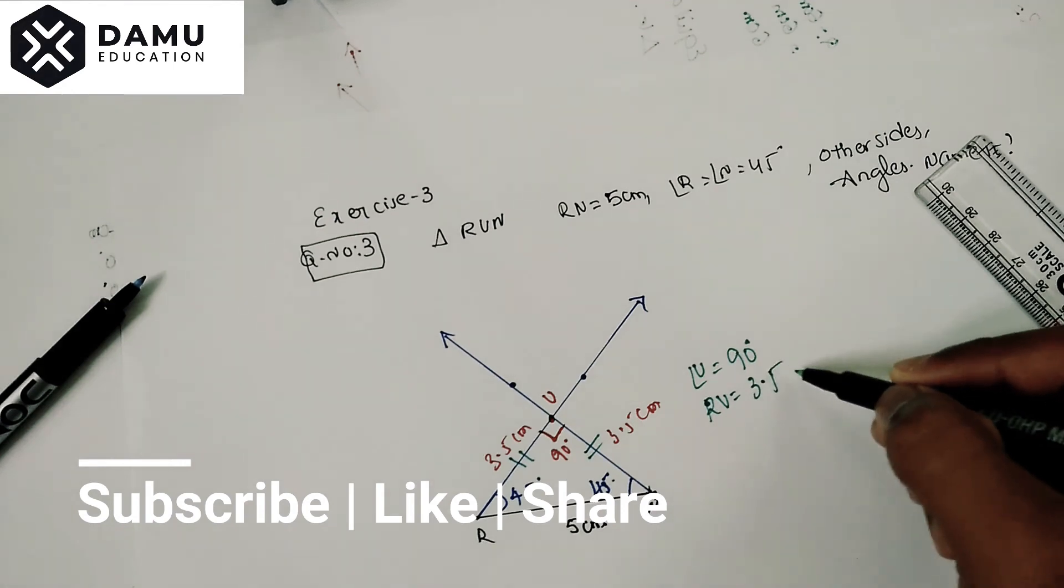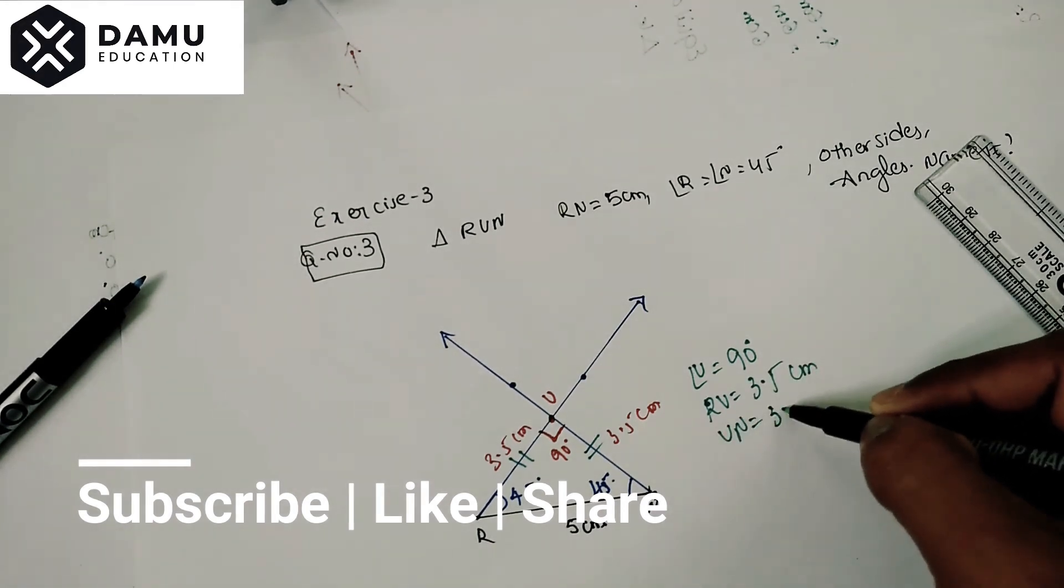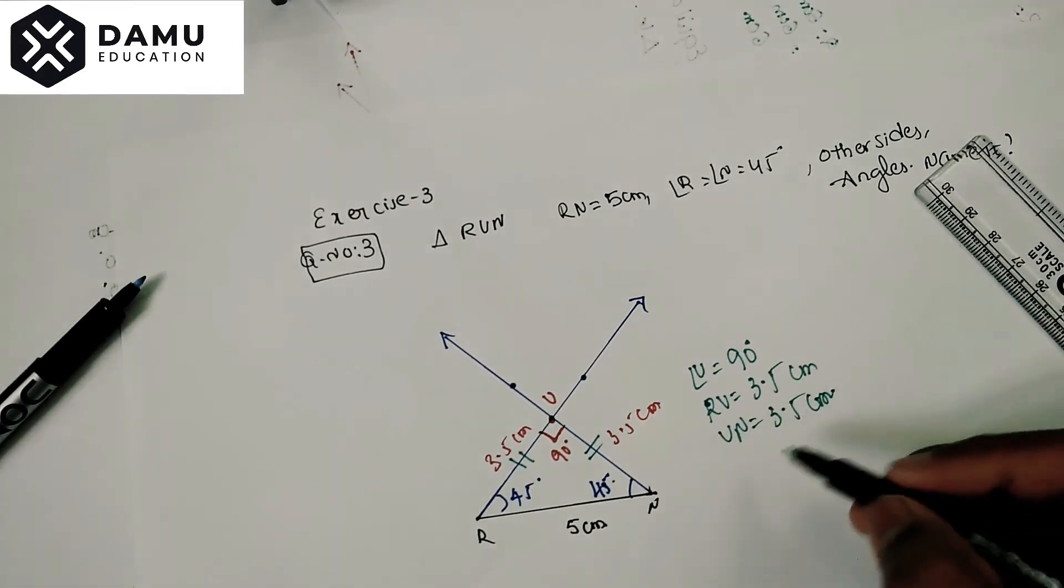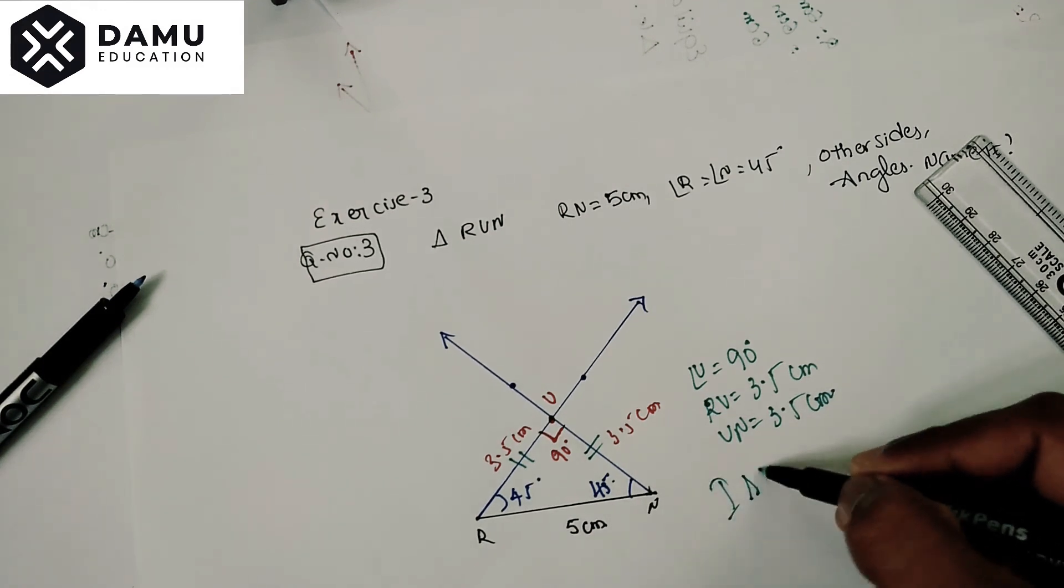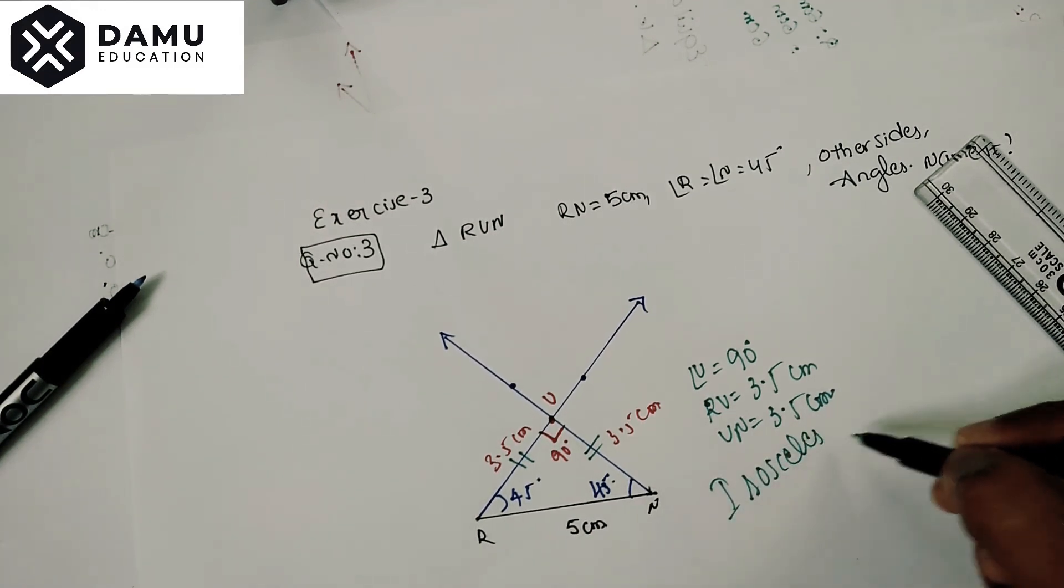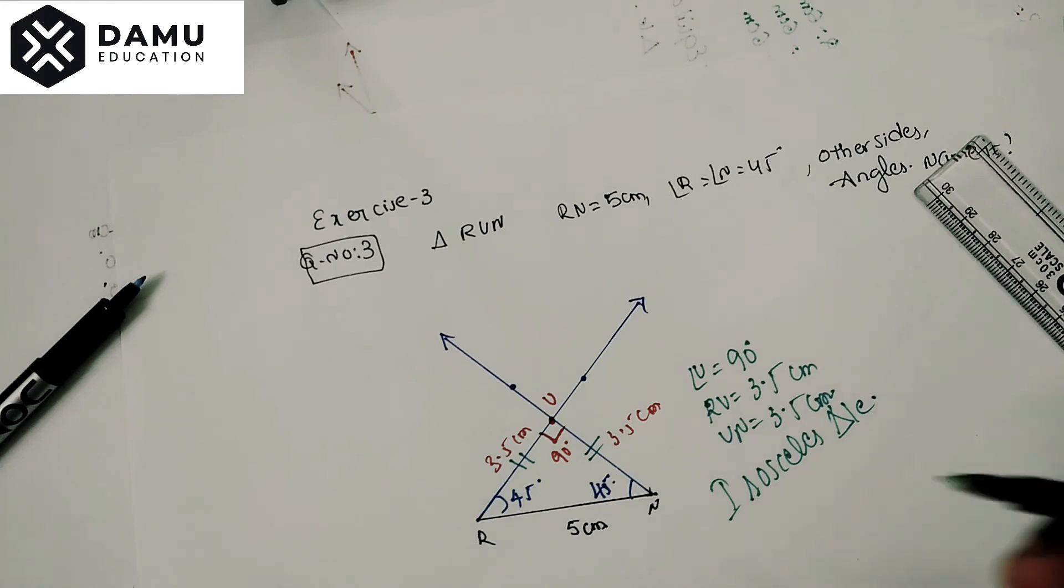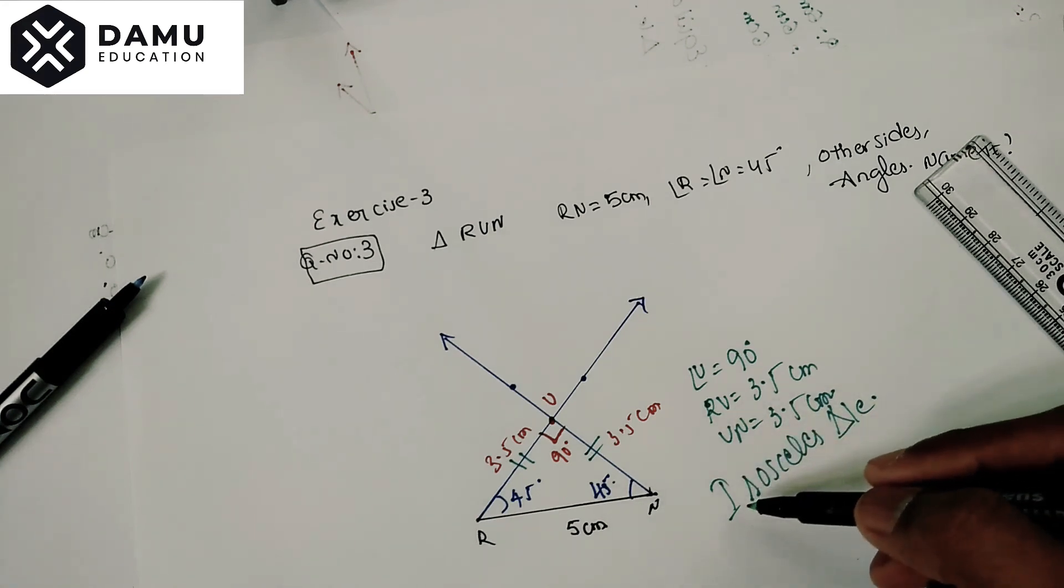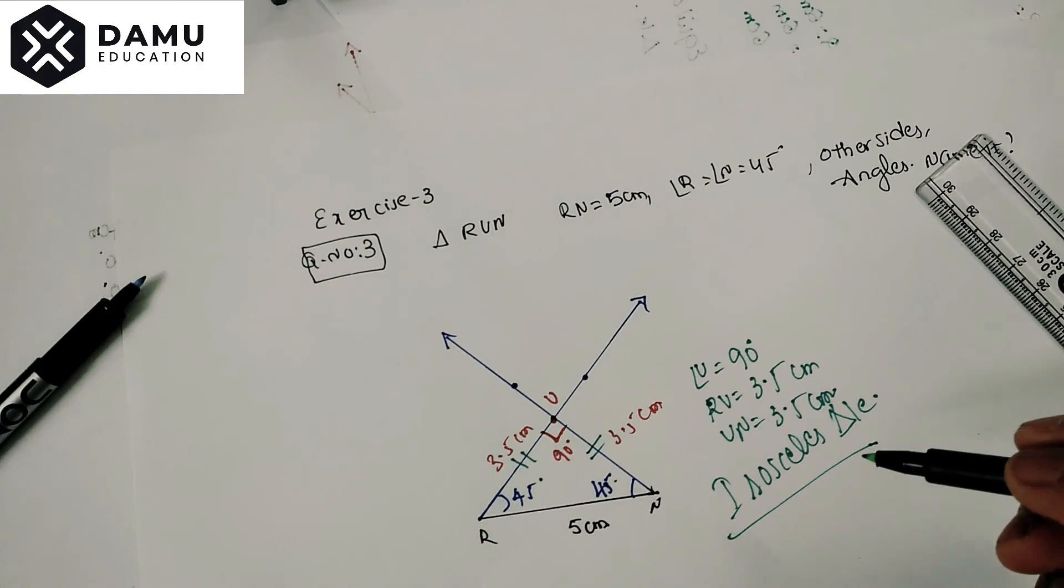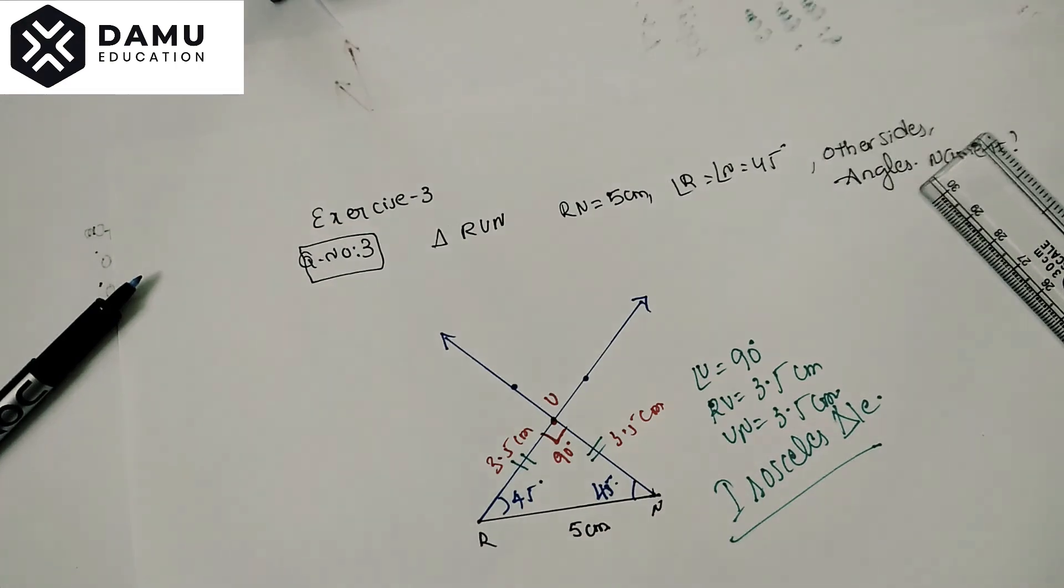Here angle U equals 90 degrees, RU equals 3.5 cm, and UN equals 3.5 cm. Then it's an isosceles triangle. Why? Because two sides are equal and opposite angles are equal, so this is an isosceles triangle.